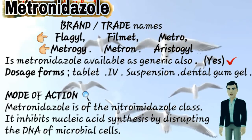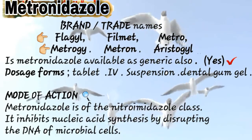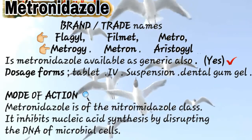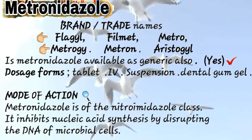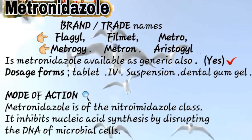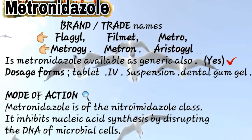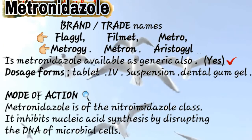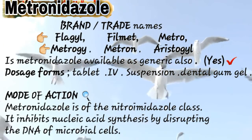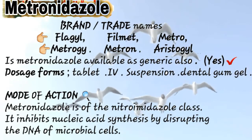What dosage forms are available in the market? Metronidazole is available as tablets, intravenous injections, suspension for children, dental gum gel, and vaginal cream. It is also available as a generic medicine and with many different brand names.